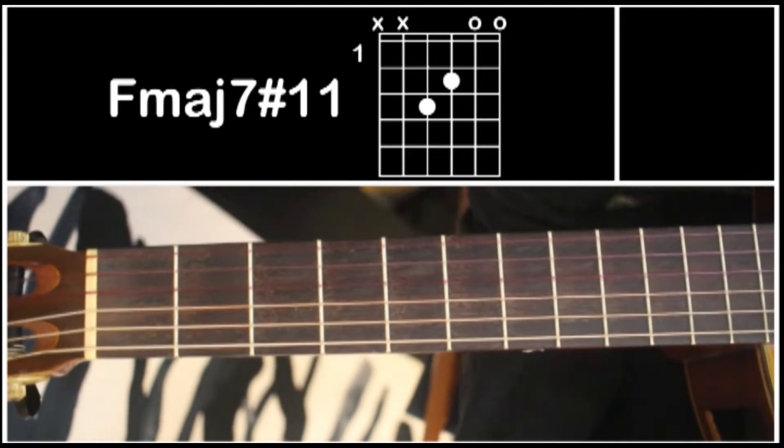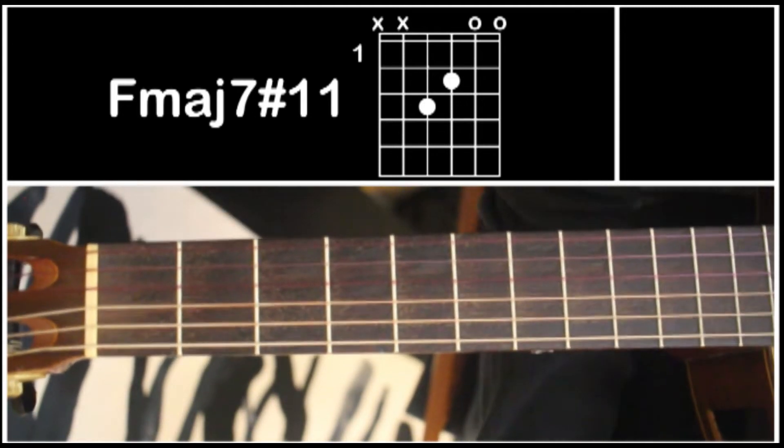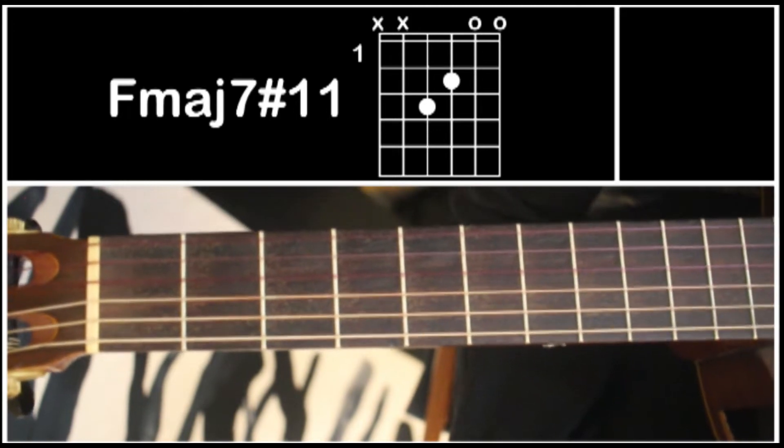Welcome to the Songwriters Chord Club, episode number 37. Today I'm going to show you an F major 7 sharp 11.